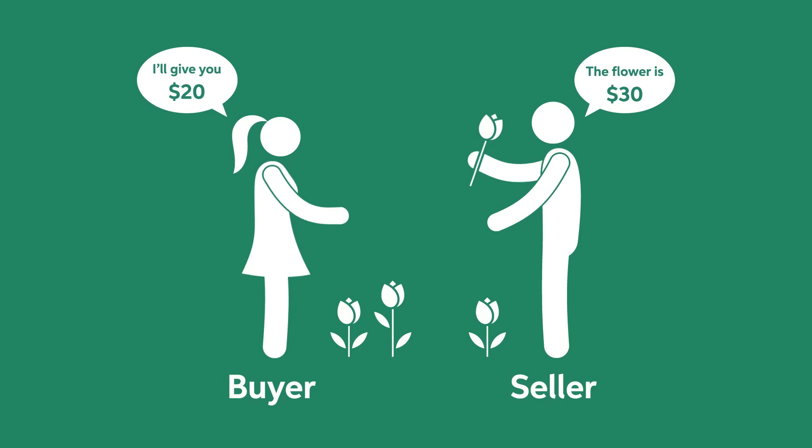Prices serve as signals that guide the allocation of resources in the economy. In other words, the organization of economic activities — regarding who produces and consumes each good, and how much of each good gets produced — is determined by prices.